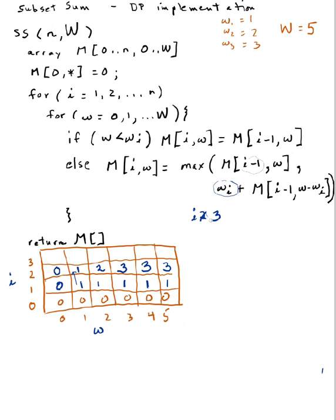Now i goes to 3, w starts at 0. Is 0 less than w sub 3, which is 3? Yes, so m[3][0] equals m[2][0] which is 0. Increment w. Is 1 less than 3? Yes, so m[3][1] equals m[2][1] which is 1. Increment w. Is 2 less than 3? Yes, so m[3][2] equals m[2][2] which is 2.